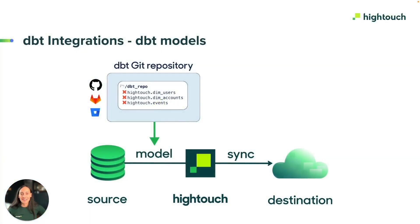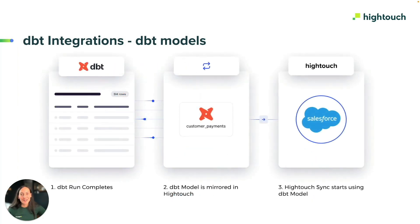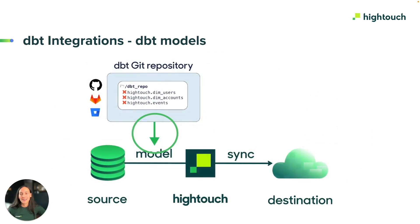Hitech supports connecting to your dbt models stored in a Git repository. Doing so enables you to trust that every destination tool, such as your CRM, ESP, or AB platforms, are all leveraging the trusted data models you've already built in dbt. Unlike GitSync, Hitech reads dbt model schemas to build models in Hitech, but it doesn't write back to them. If you want the changes you make to your Hitech models to update in dbt, the best way to do so is directly in your dbt Git repository.